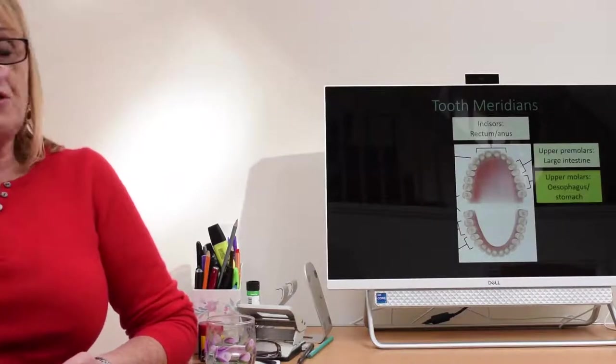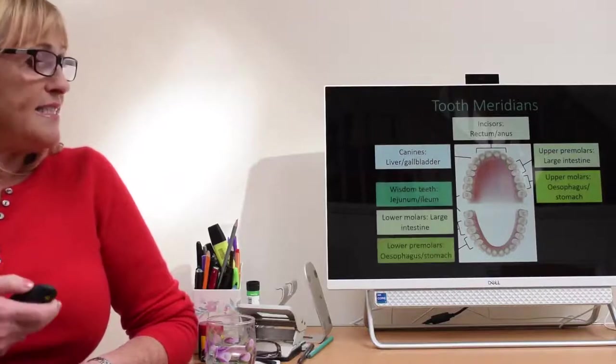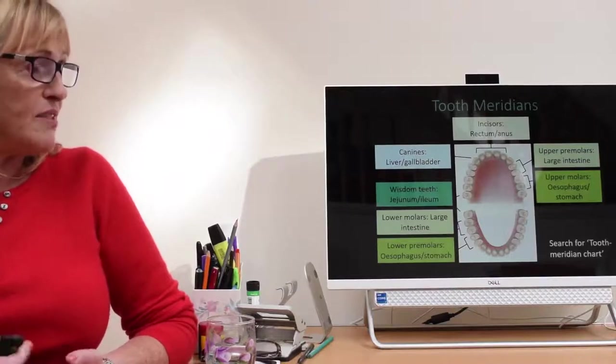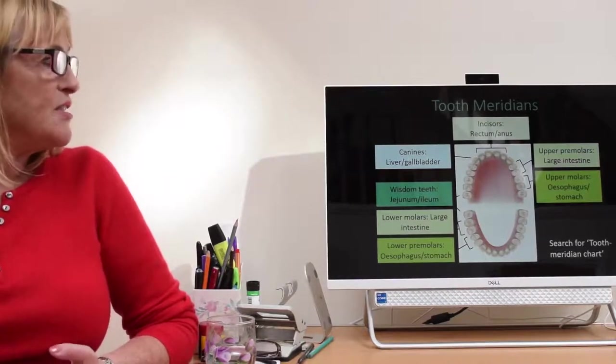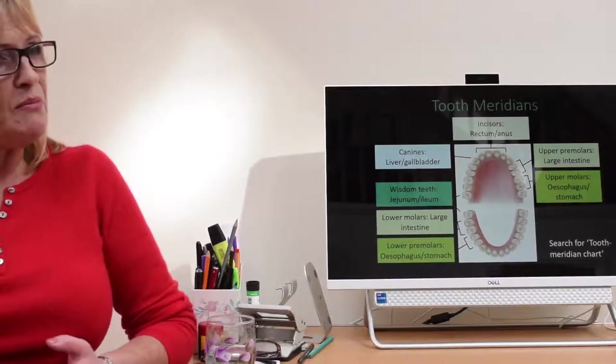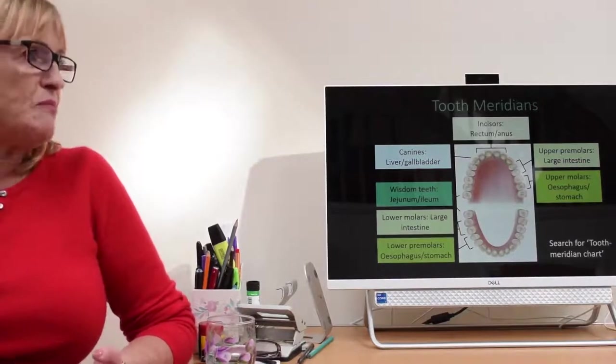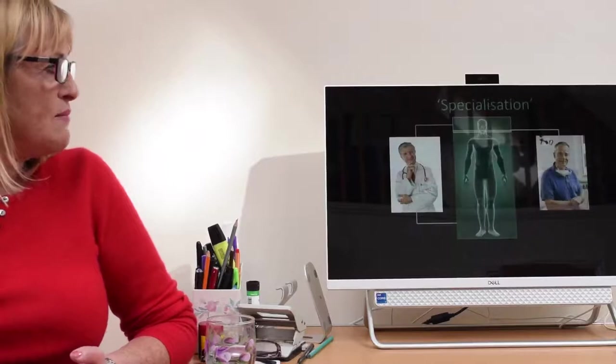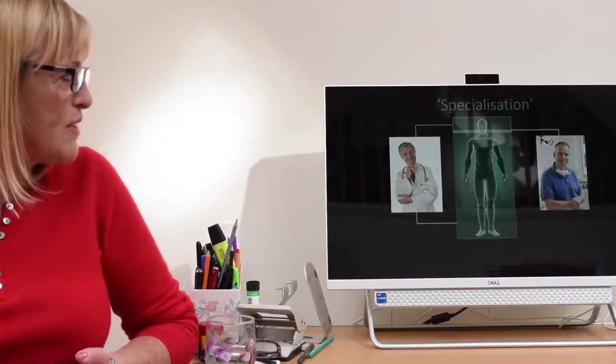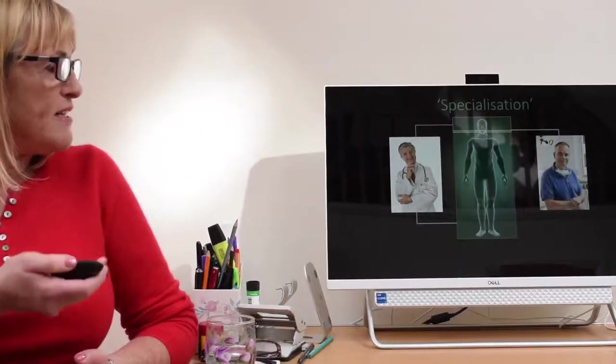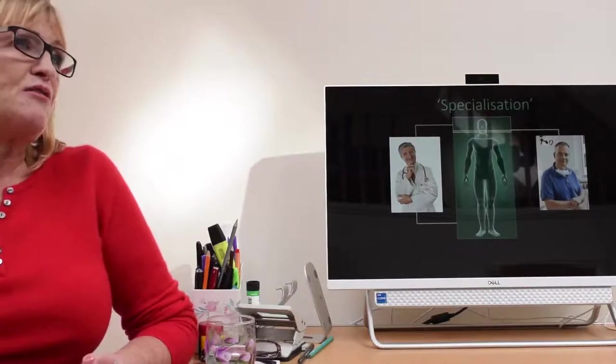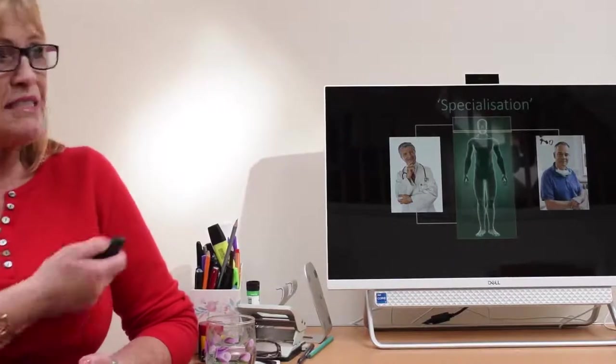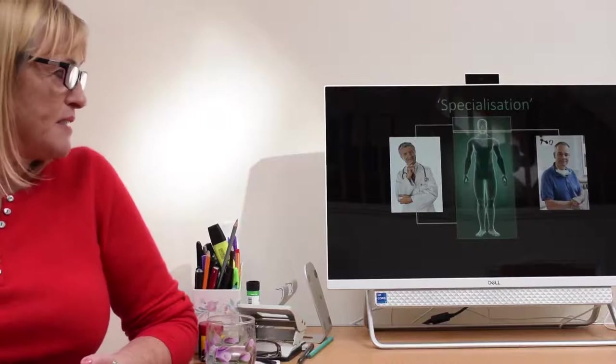Each tooth is on a meridian. There's a circuit between the organ, the meridian, and the tooth. The tooth may be causing problems with the organ, or the organ may be causing problems with the tooth. You can look these up if you look online on tooth meridian charts. Dentists are only really looking at the mouth. They don't know that people subsequently go on and get diseases after their treatment. And doctors are only looking at the rest of the body, they don't look at the mouth. So nobody's putting the pieces of the puzzle together.